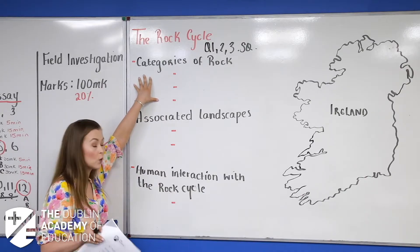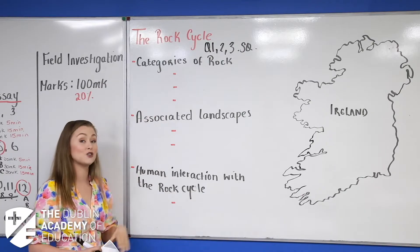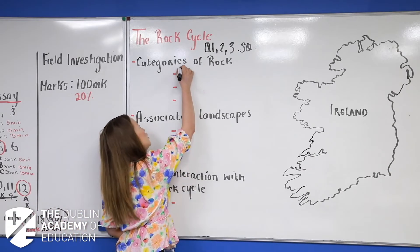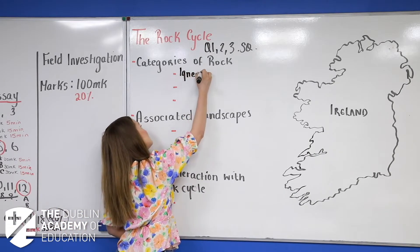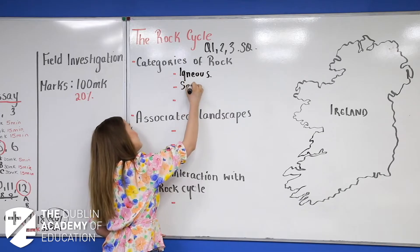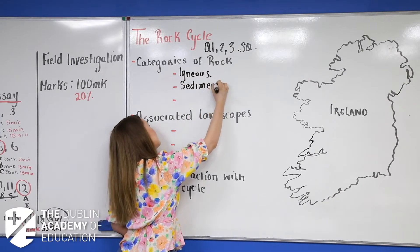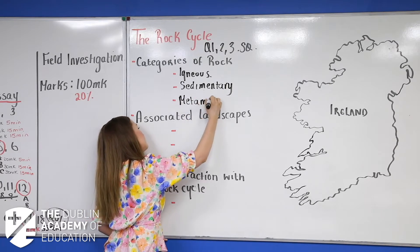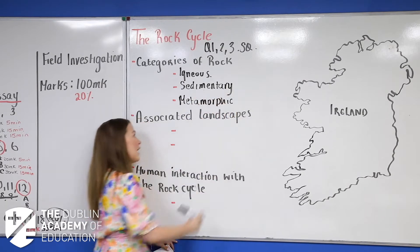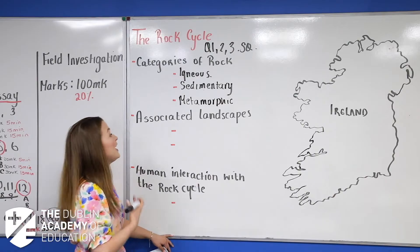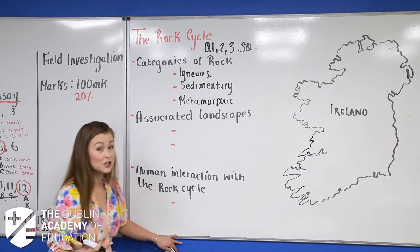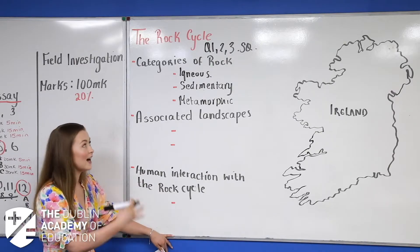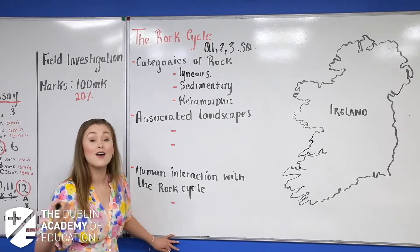There are six S's in total. The first thing they can ask you is your categories of rock. You'll notice from junior cert these are the basics: your igneous, your sedimentary, and your metamorphic rocks. Each of these obviously has its own category.